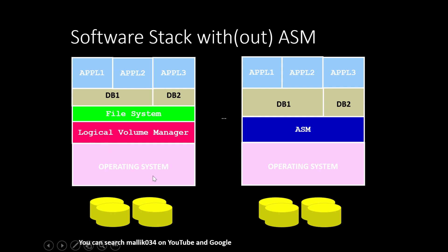Comparing the software stack with and without ASM: on the left side is the stack without ASM, on the right side is with ASM. You can see four storage disks on each side. For DB1 and DB2, without ASM the data resides in files on storage accessed through a volume manager and file system installed on top of the operating system. With ASM, you replace that volume manager and file system — ASM handles the IO requests for both databases.